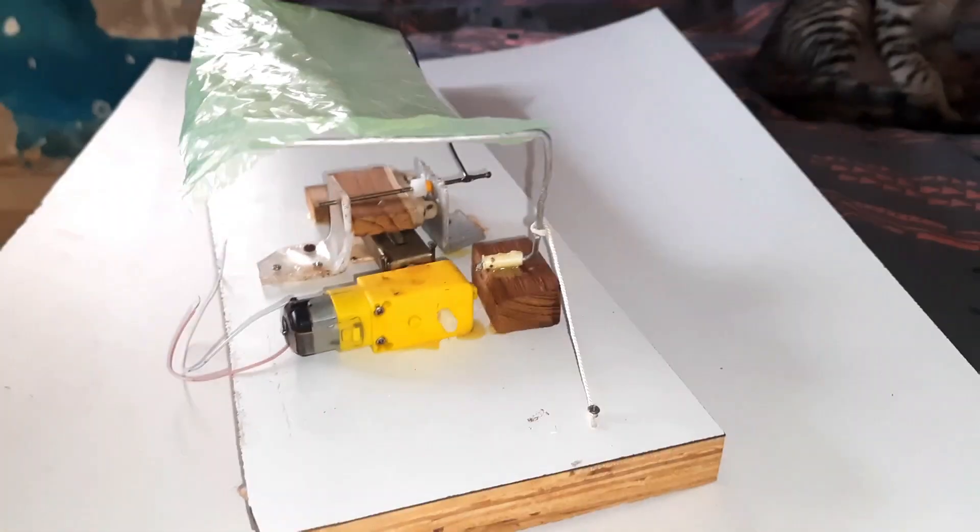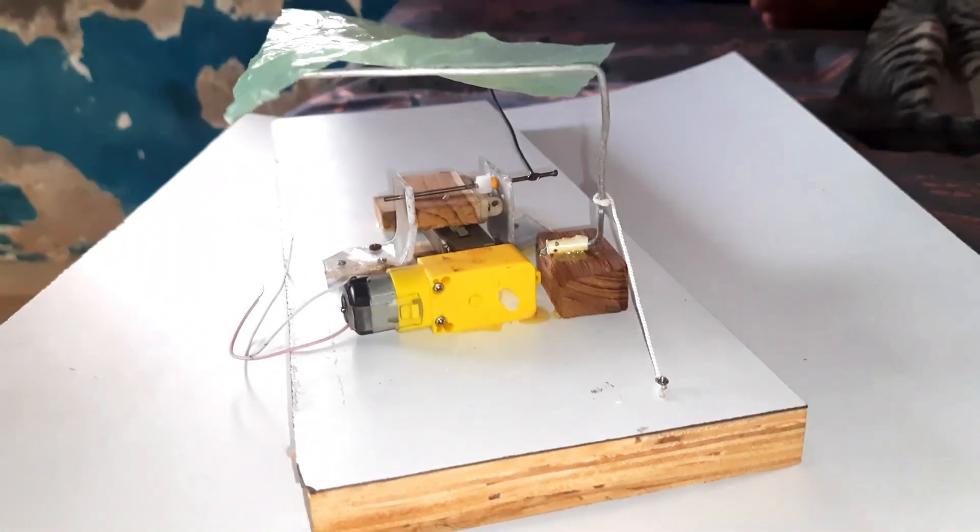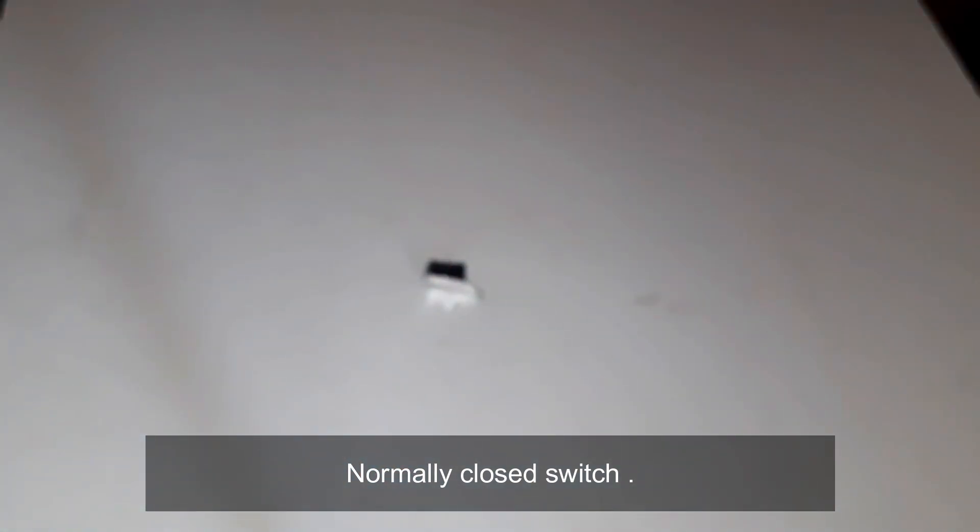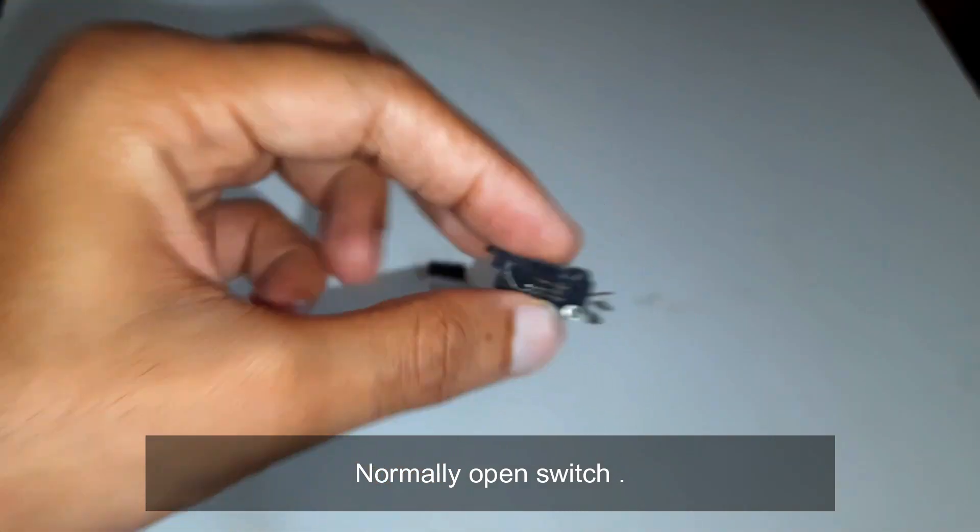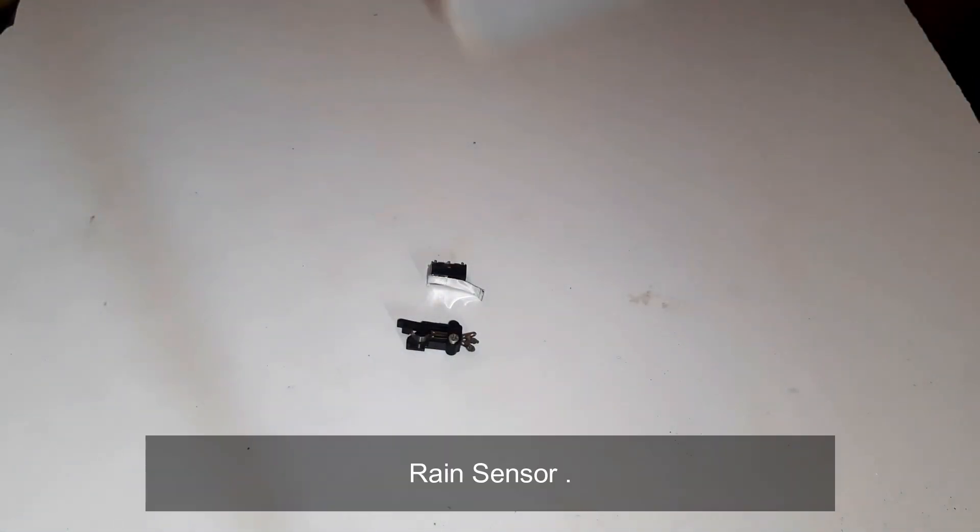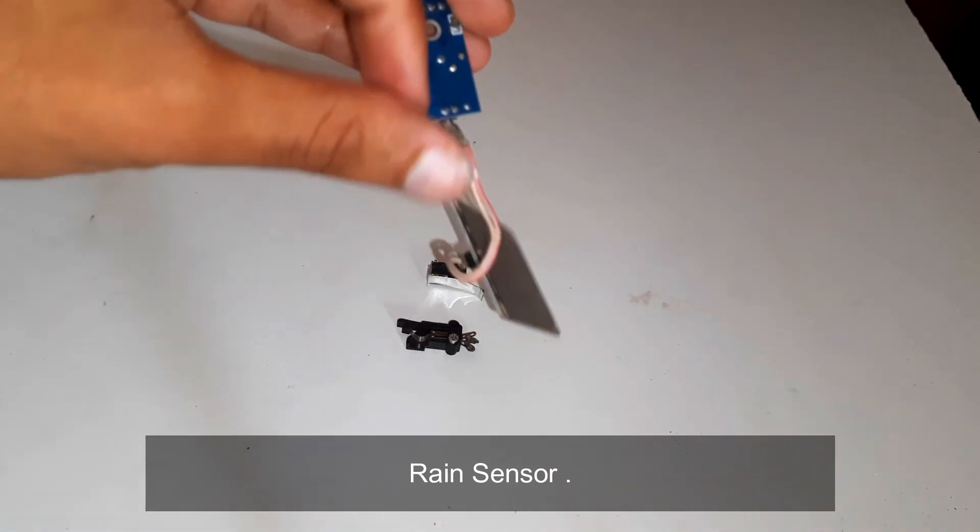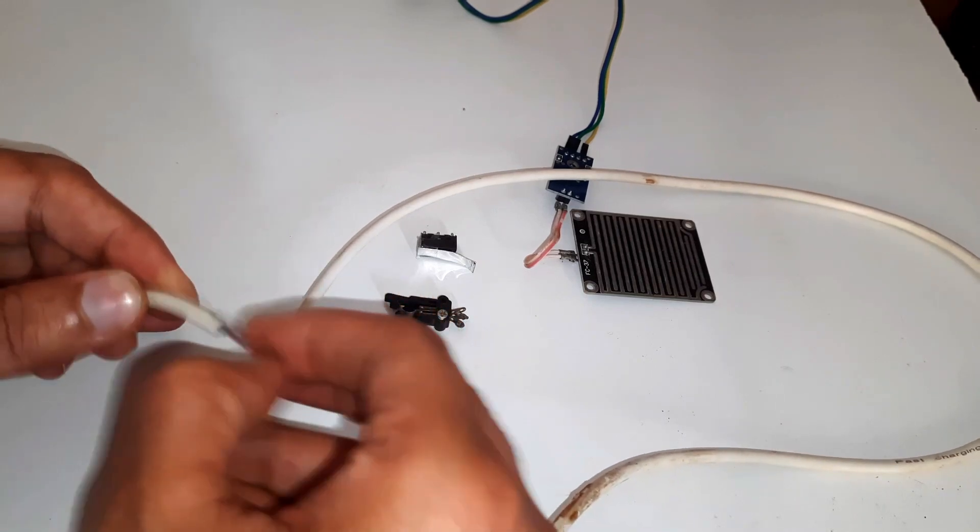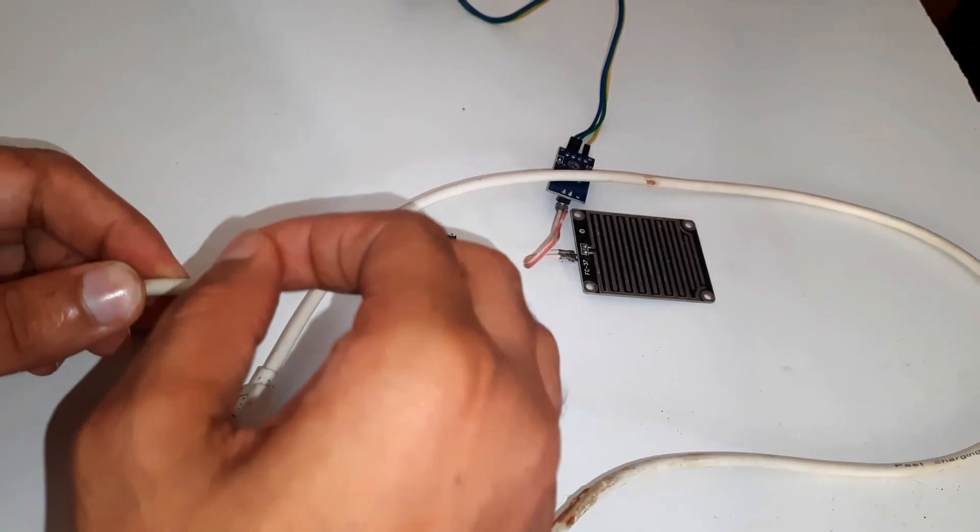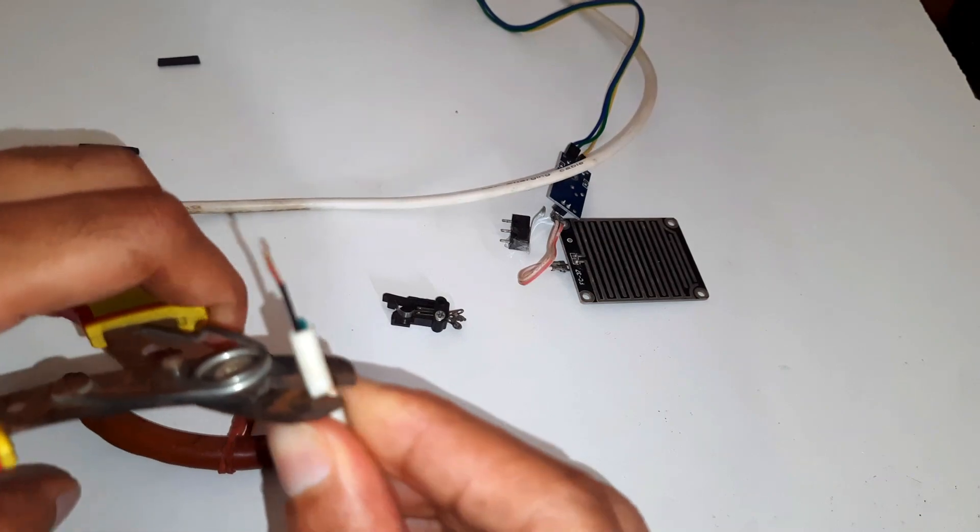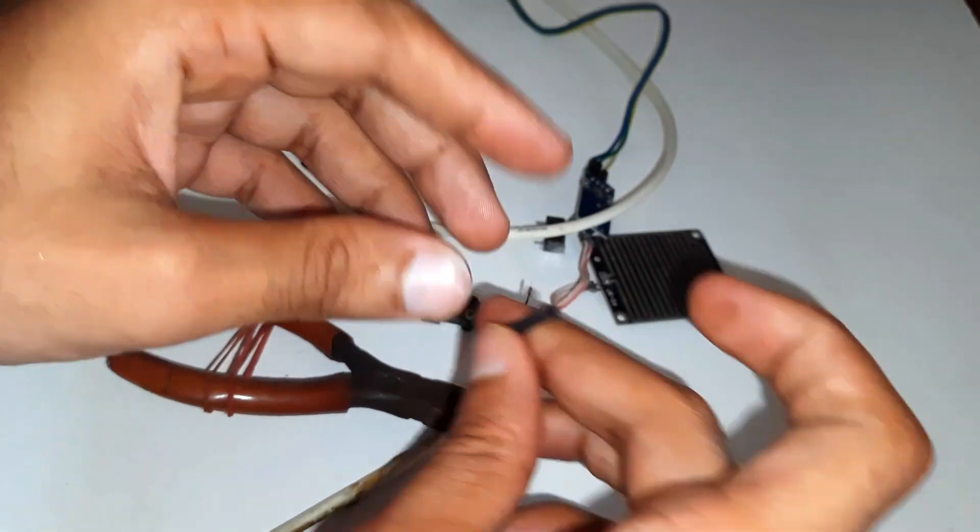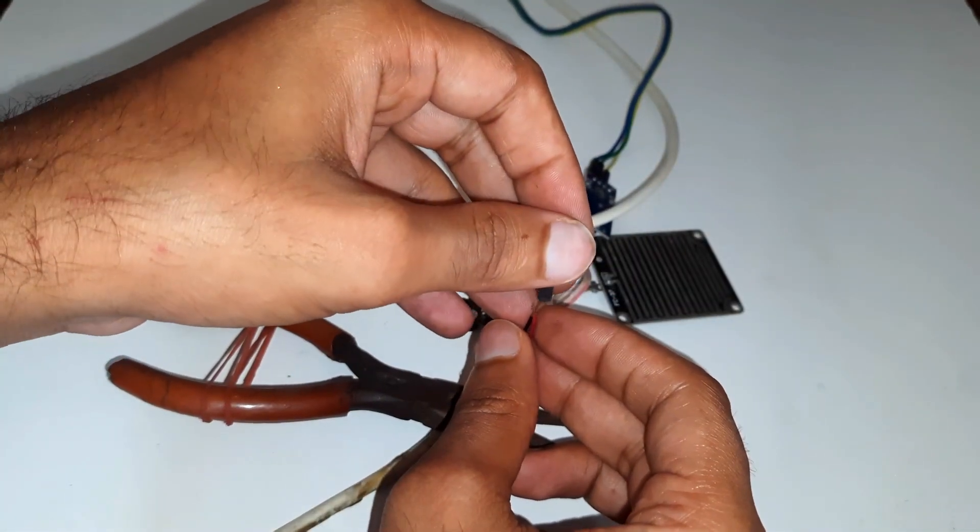Now we have to do the wiring work. For that we need this normally closed switch, a normally open switch, a rain sensor module, and a USB cable for the power source. We only need the positive and ground wire, so I will remove the other two wires.